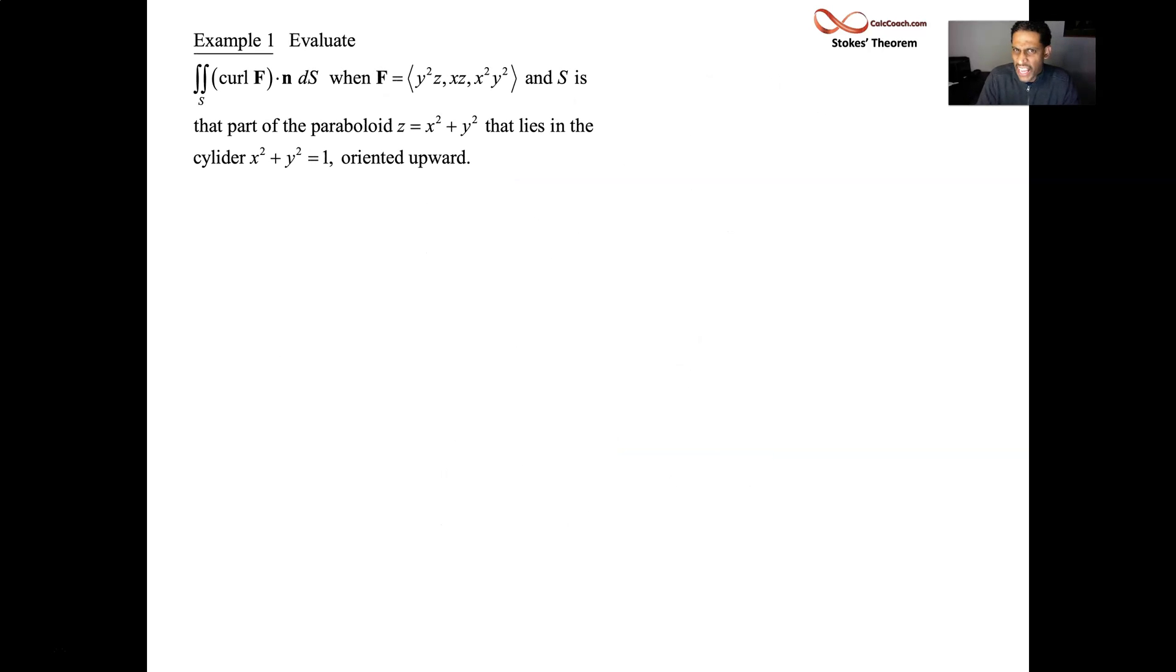You are asked to calculate the outward flux of the curl of this vector field F, and your surface is the part of the paraboloid. Paraboloid's a bowl. The part of the paraboloid, this paraboloid opens upward. Z equals x squared plus y squared. We only want the part that lies inside of the unit cylinder, x squared plus y squared equals one. Z is allowed to be anything you want it to be. That paraboloid eventually outgrows that cylinder and continues on upward. We only want the part of the paraboloid that is inside of the cylinder. So here's a picture for you.